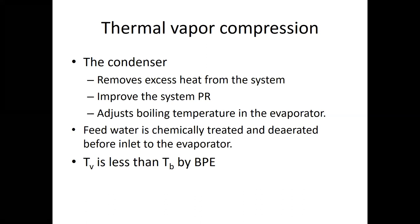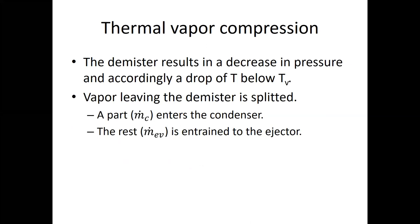The BPE can be calculated by correlations or using the Engineering Equation Solver as a function of saline water temperature, salinity, and pressure. The mist eliminator, or demister, causes a small pressure decrease, which in practice reduces the temperature slightly below TV; in our calculations we neglect this. The vapor leaving the mist eliminator is split: part goes to the condenser as M-dot C, and the rest as M-dot entrained vapor is entrained into the ejector. So M-dot C plus M-dot entrained vapor equals M-dot vapor, the total distillate obtained from the unit.